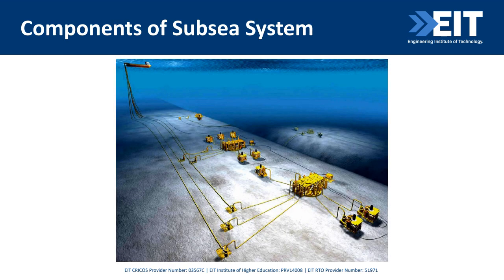Now looking at the components of the subsea system. We have four major types of topside host: spar, tension leg platform, semi-submersible, and FPSO. Looking at the system drawing, you can see the FPSO at the top, which could be a semi-submersible, TLP, or spar. Starting from the wellhead, through the christmas tree, well jumper, manifold, flowline jumper, pipeline end plate, pipeline, riser, up to the umbilical termination assembly — we will now look at each of these components one by one.